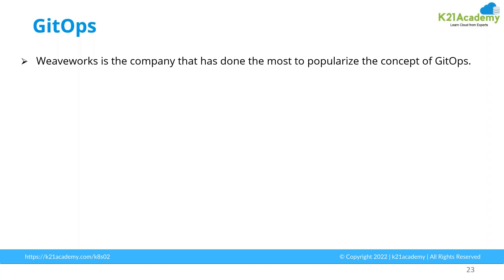It applies those DevOps best practices to infrastructure automation. Till now you have seen application deployments — how you can speed up deployment, how you can do integration testing. But the second portion is how you can apply this to infrastructure automation, like scaling up or scaling down your infrastructure. That's where GitOps comes into the picture. GitOps not only focuses on automating application deployment, it also focuses on automating the underlying infrastructure, whether it is Kubernetes, OpenShift, VMware Tanzu, or any other underlying platform.